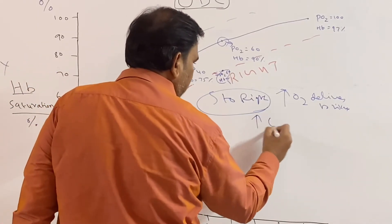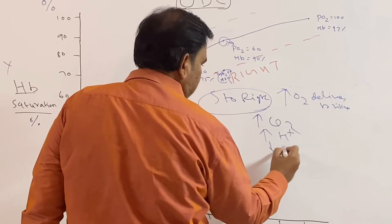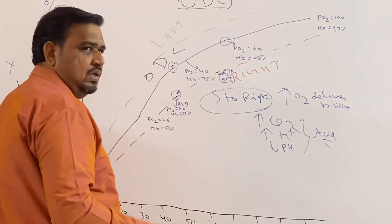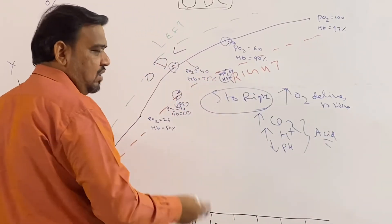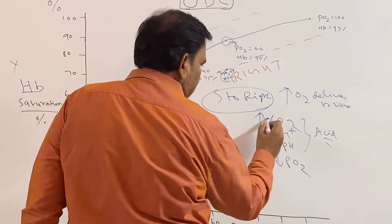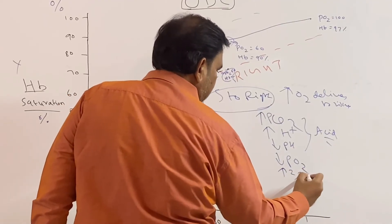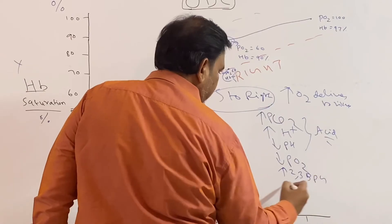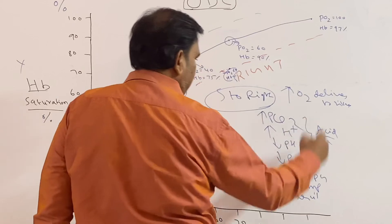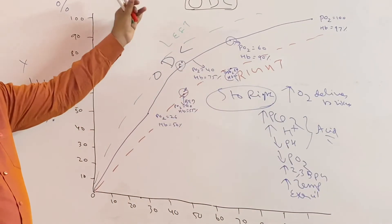As I explained in my previous oxygen dissociation video, the causes of shift to right are: increased carbon dioxide, increased H+ ions, decreased pH — all related to acidosis — decreased PO2, increased PCO2, increased 2,3-BPG, increased temperature, and exercise. All these conditions cause shift to right. The reverse of these causes shift to left.